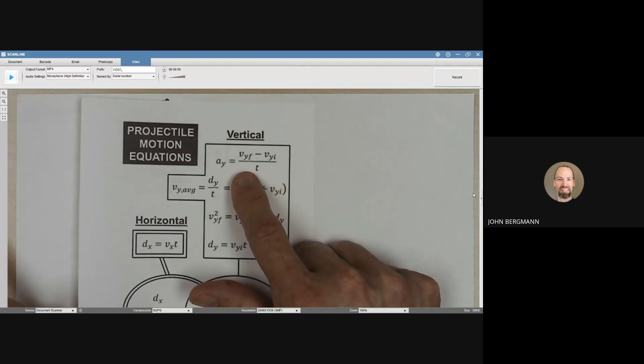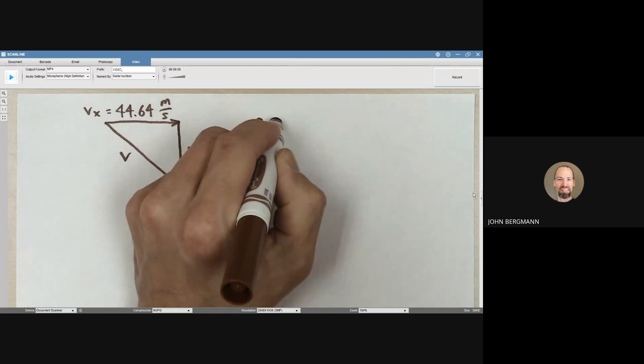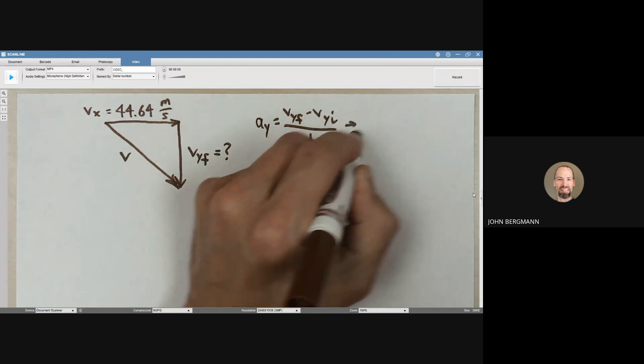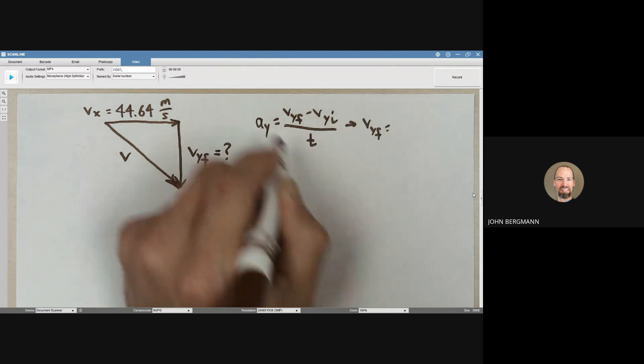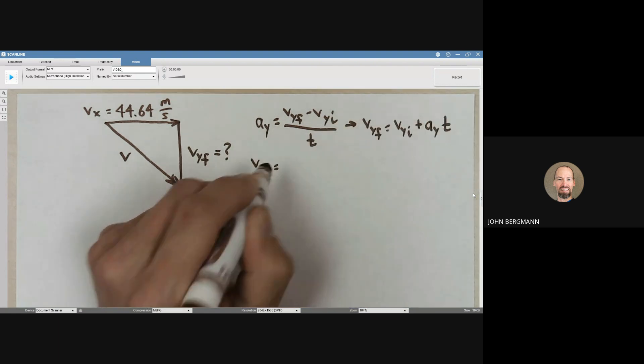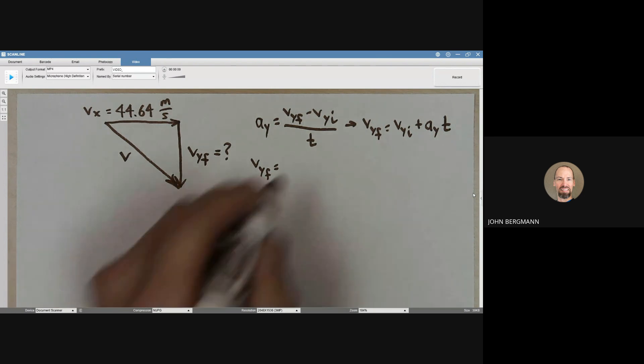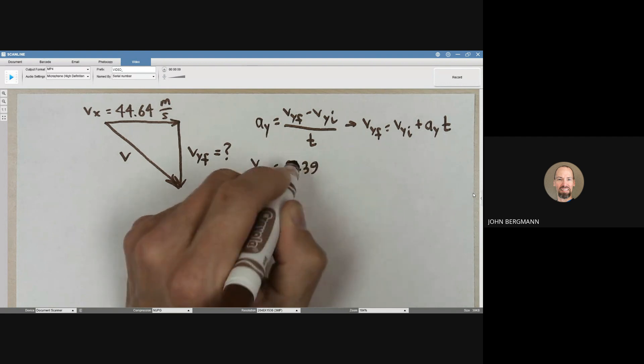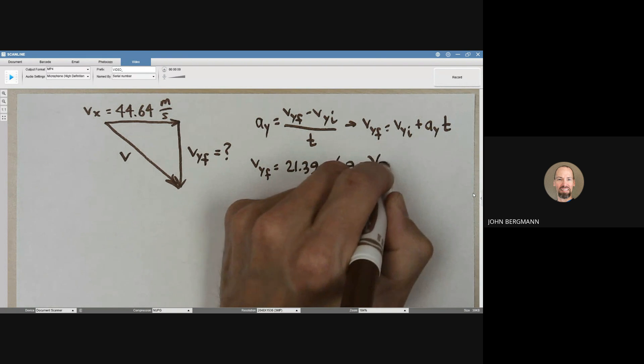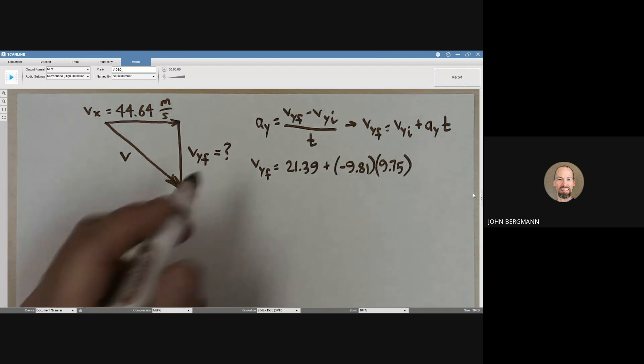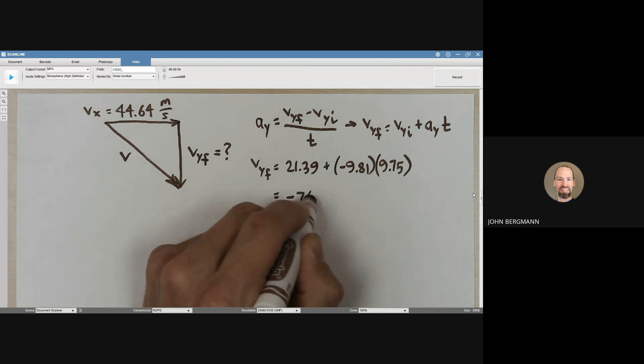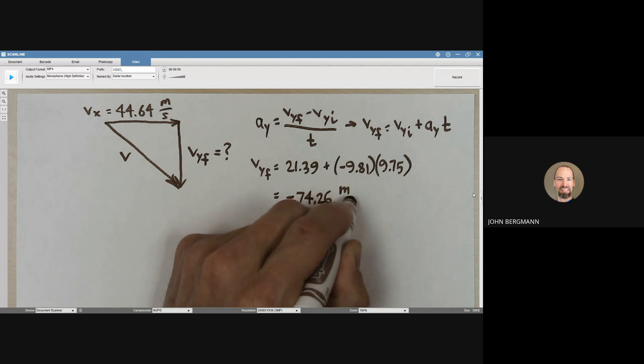I think we actually said it in the video right before this one. We're going to use this top equation right here. Ay is equal to vy final minus vy initial divided by time. Solve that for vy final. Multiply both sides by T and add vy initial to both sides. Let's calculate this. vy initial was positive 21.39, but again, ay is negative, and the time that it's in the air is 9.75 seconds. When you calculate that, that comes out to be negative 74.26 meters per second.